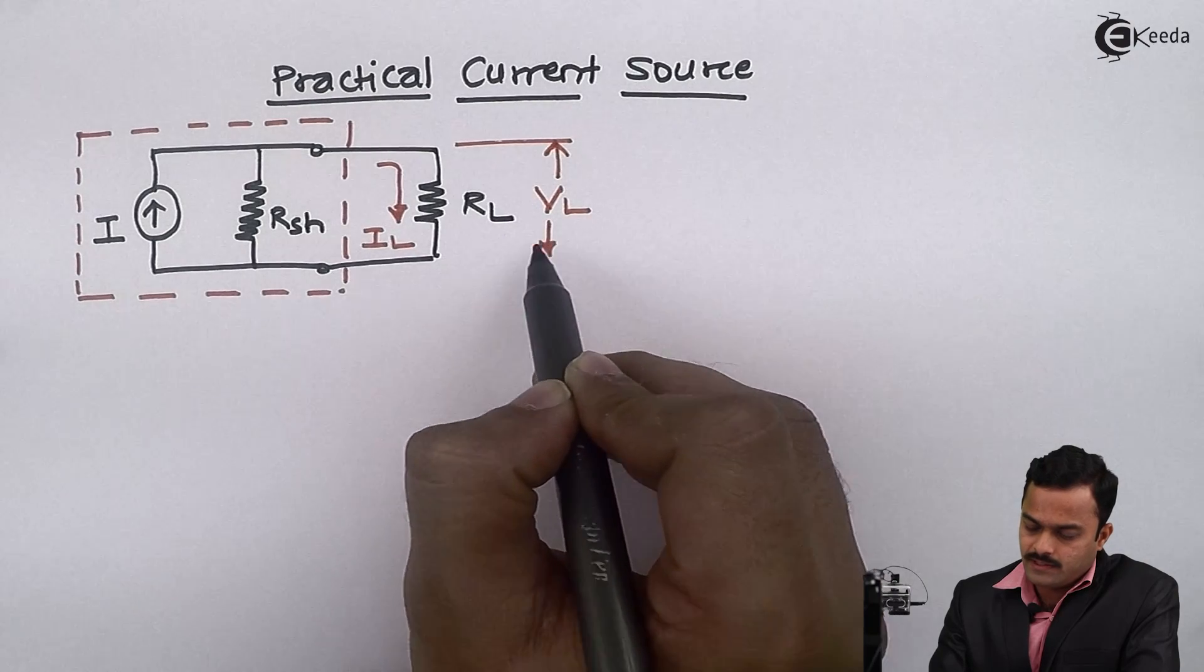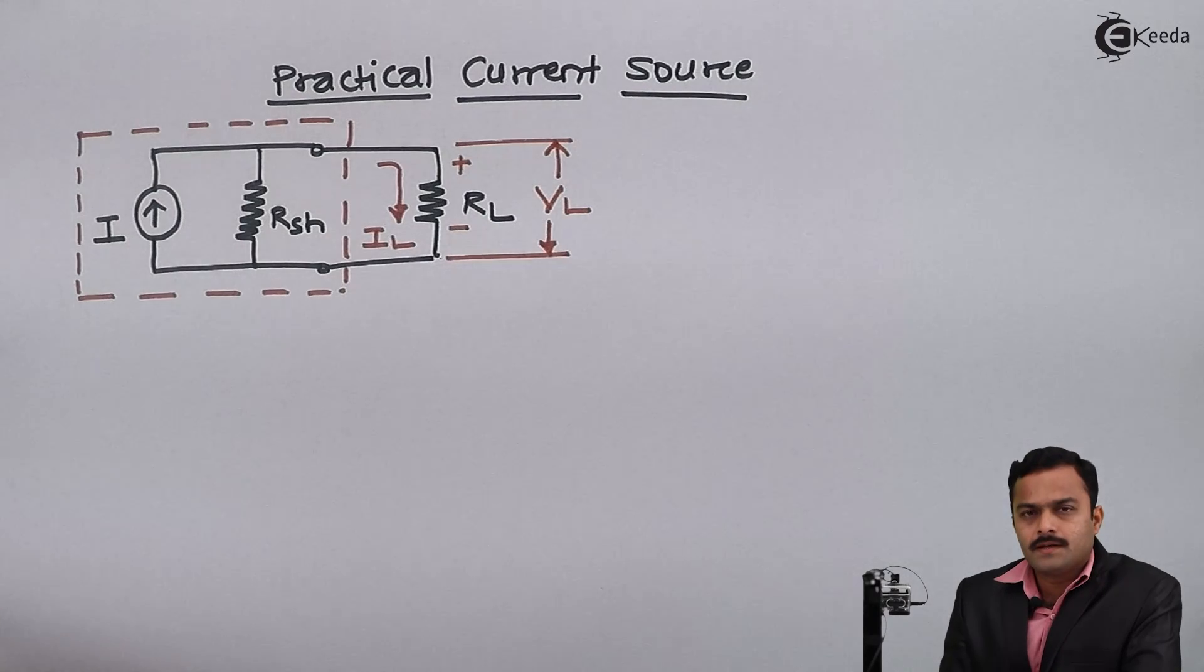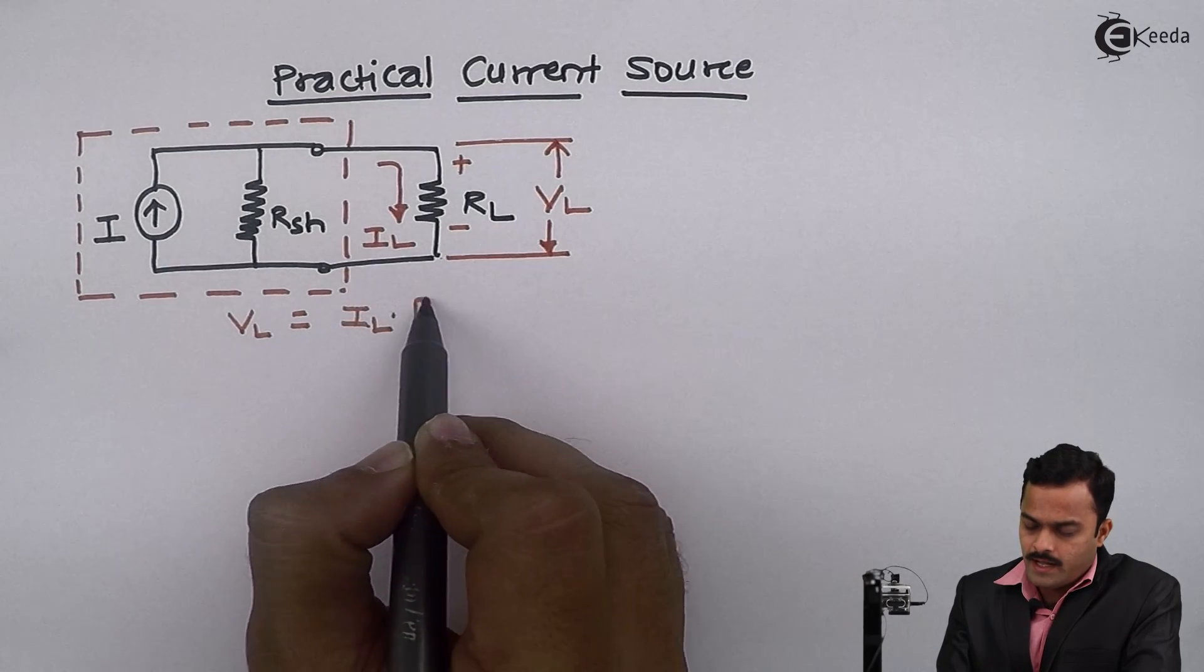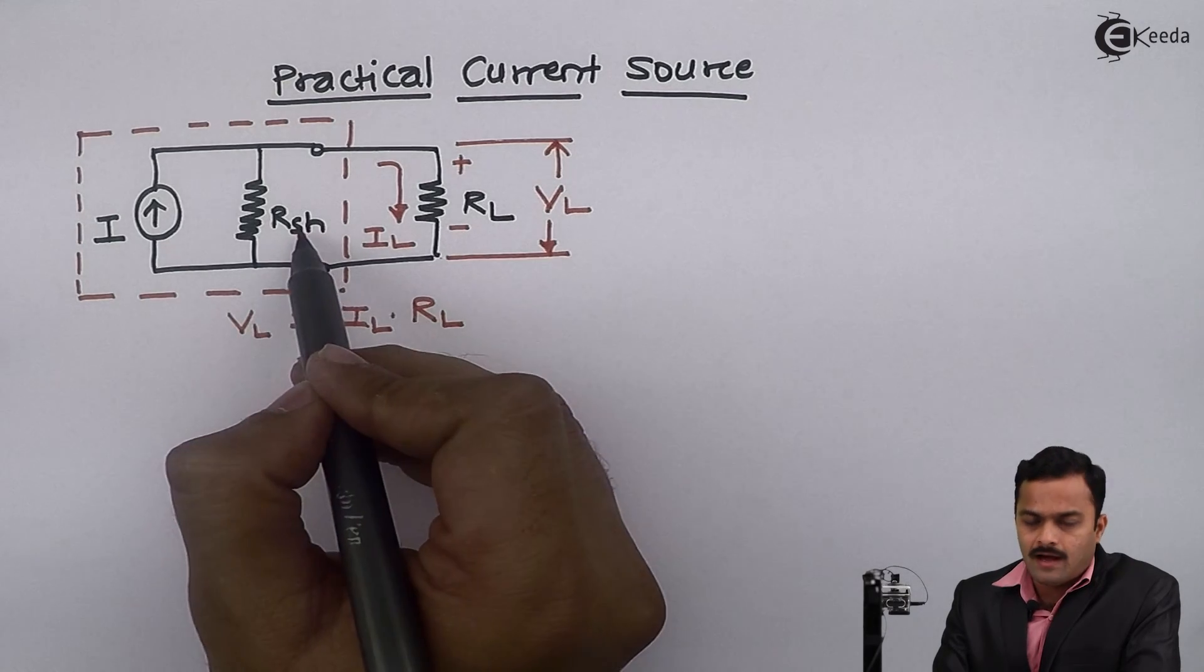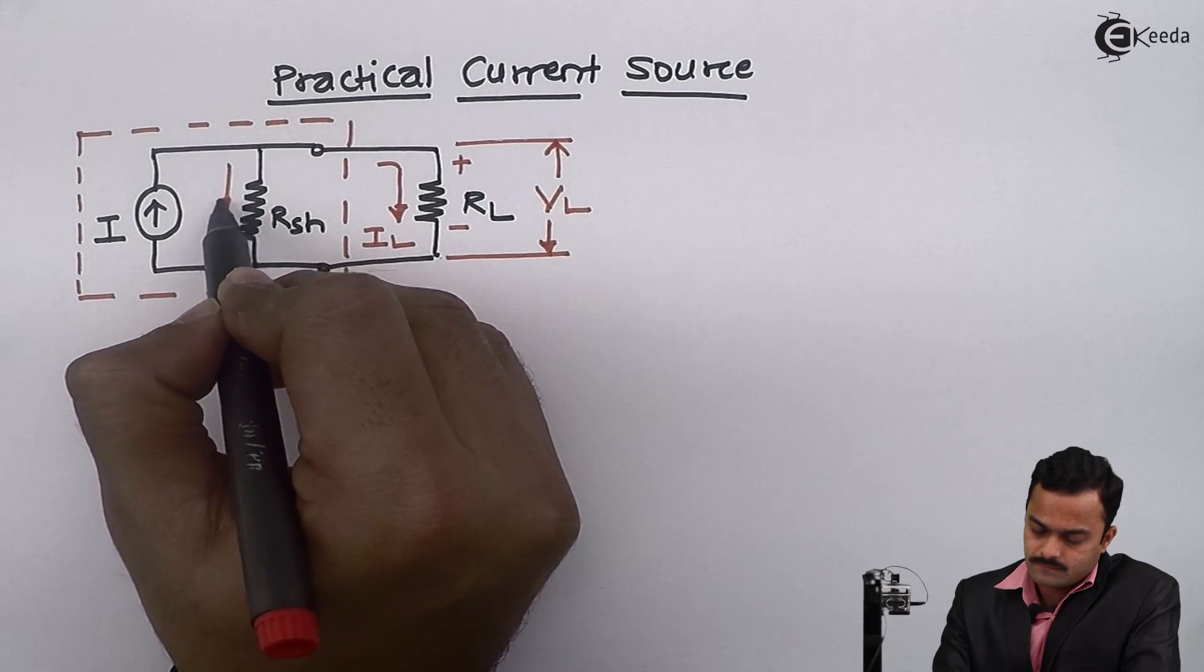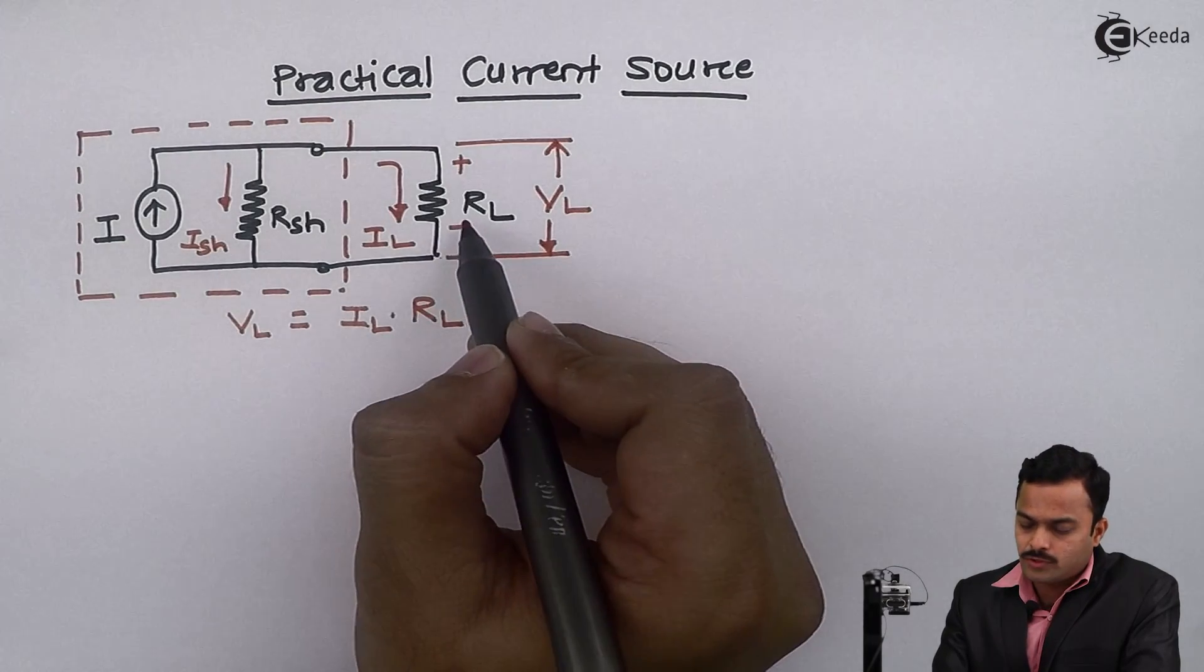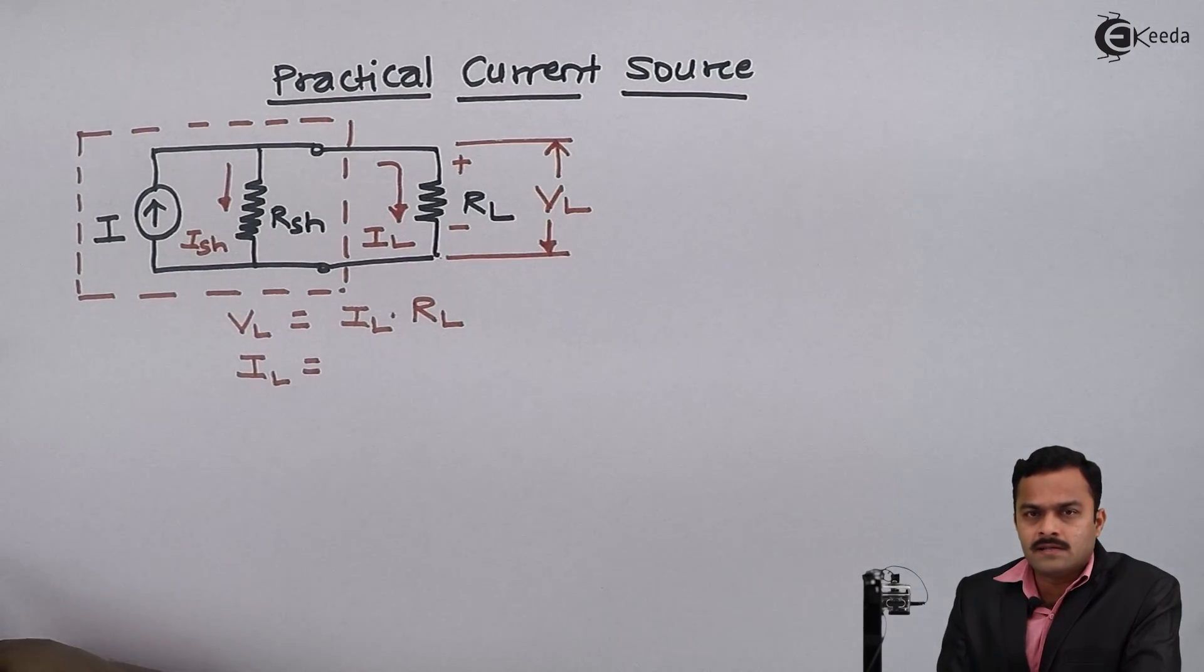Given by VL, so again VL equals IL into RL. But because of this Rsh, some current is going to flow through this and I can say the current flowing through the RL is given as I minus Ish.